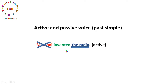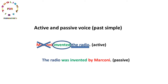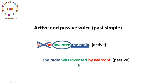أول خطوة نحذف الفاعل. ثاني خطوة نأخذ المفعول به ونحطه في بداية الجملة. 'The radio' ما دامت مفرد معناها هنقول was بعدها، ثم نأخذ الفعل ونحطه بالتصريف الثالث. باعتبار أنه regular verb حيكون بنفس الصيغة يعني بال-ED. تصبح الجملة: 'The radio was invented by Marconi.' أصبحت جملة مبني للمجهول بمعنى أن المذياع اخترعه ماركوني، أو اخترع ماركوني المذياع.